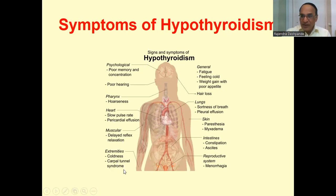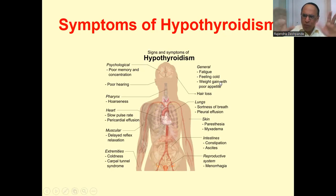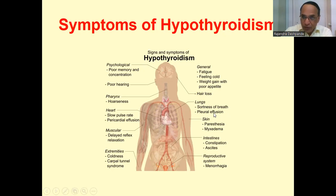Carpal tunnel syndrome may be present as a comorbidity. Generalized symptoms include fatigue, tiredness, feeling cold all the time, and weight gain with poor appetite. Hair loss will occur; the lungs may show shortness of breath or breathlessness; pleural effusion may sometimes occur. In the skin there is paresthesia and myxedema. Intestinal constipation and ascites may develop. In the reproductive system, there may be menorrhagia.